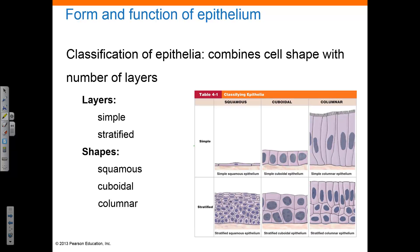Epithelial tissue is classified based on the number of cell layers and the cell shape. The epithelial is either simple, composed of a single layer of cells, or stratified, consisting of two or more layers of cells. Stratified epithelial tissue is commonly found in areas exposed to high stress where more wear and tear can occur, such as in the mouth.